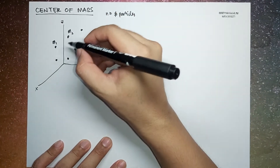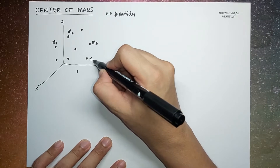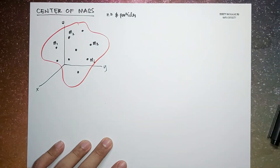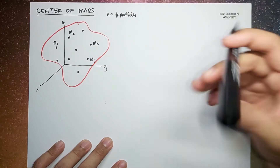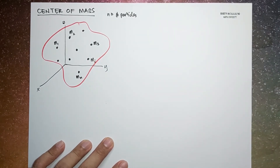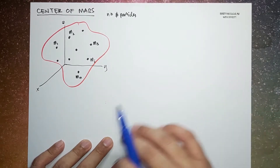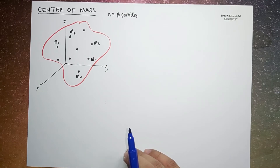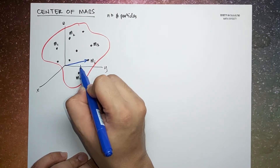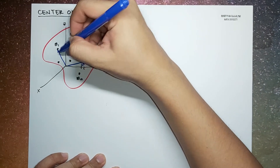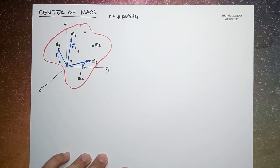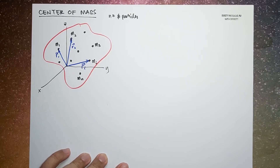Let's say this particle is a representative particle of the system. Let's call its mass m. Each of these particles is represented by its respective position vector r_i, so for a given particle this will be r_i — for example r1, r2, and so forth.